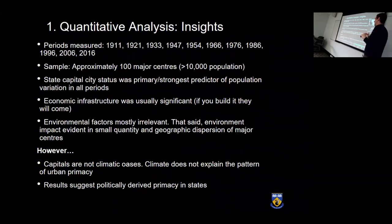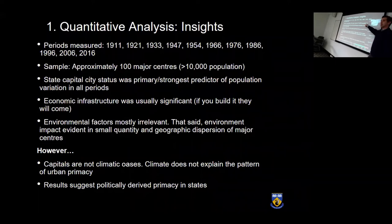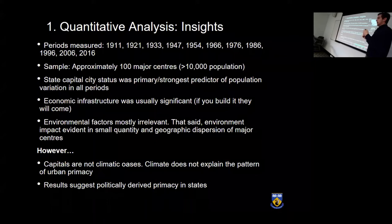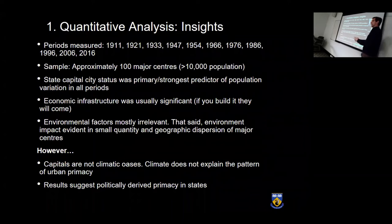Our small sample of 100 centers, compared to over 300 that the same method would yield in Canada, already speaks to environmental constraints. However, once you isolate the centers that do exist, environmental factors don't differentiate between them — the capital is not a climatic oasis. There are centers with comparable natural endowments that are not large. These results suggest we have a politically derived primacy. This isn't definitive, but it helped narrow down the options and sharpen our focus.